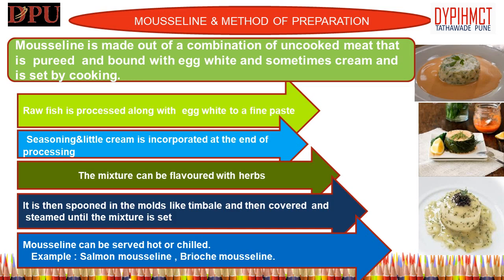Procedure for making mousseline: Chill all ingredients and equipment to around 40°F throughout the preparation. Cut fish, scallop, chicken, or veal meat into proper size. Grind in a food processor until smooth — do not over-process. Add egg and pulse. Add cream and seasoning in a steady stream while the machine is running. Stop and scrape sides down. If desired, pass through a drum sieve to remove sinew or bones, over an ice bath. Fold in any garnishes to be added. Poach a small amount in stock or water, taste, and adjust seasoning and texture. Pipe the mixture into molds, cover with cling wrap or aluminium foil, and poach till done. Refrigerate until ready for use.